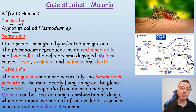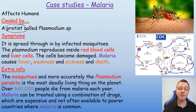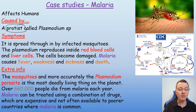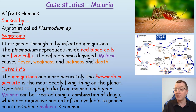The mosquito, and more accurately the plasmodium parasite, is the most deadly living thing on this planet. Over 660,000 people die each year from malaria. Malaria can be treated using a combination of drugs, but these drugs are expensive and often not available in poorer countries and to poorer people where malaria is common.